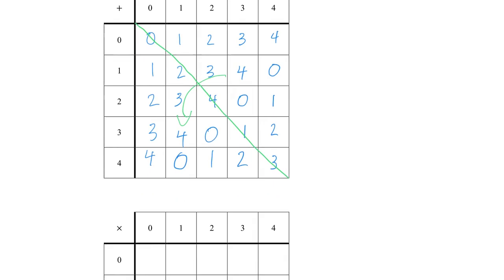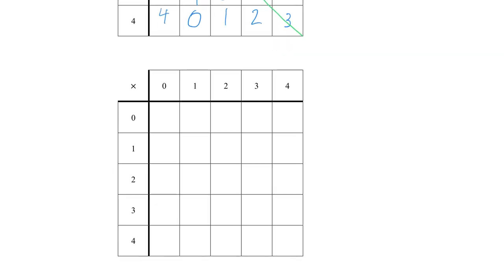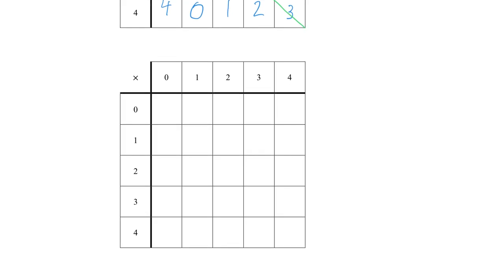Next we're going to work on the multiplication table in mod 5. So 0 multiplied by any number gives us 0. So I'll fill in all of my zeros. 1 multiplied by any number gives us that very number back again, and same goes for mod 5 arithmetic. So 2 times 2 is 4. 2 times 3 is 6, which reduces to 1. 2 times 4 is 8, which reduces to 3.